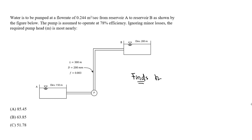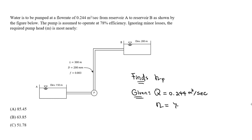What we're given: the flow rate Q equals 0.244 m³/s, and the pump efficiency is 78%, denoted with subscript P.